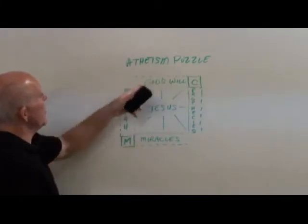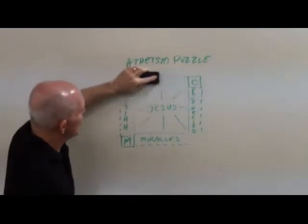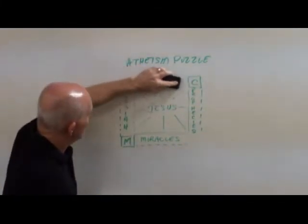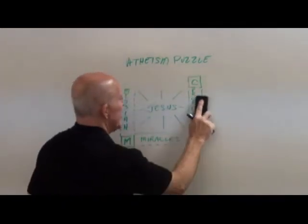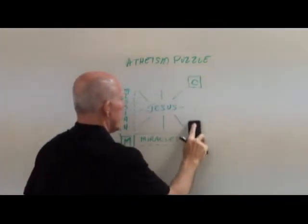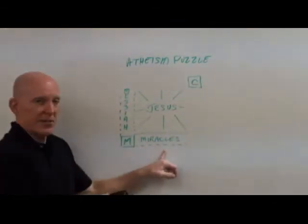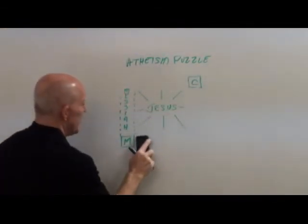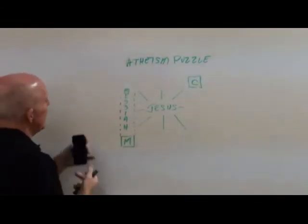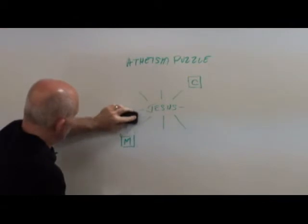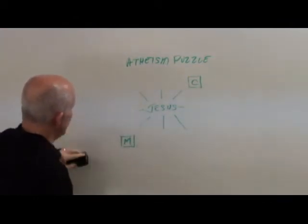We look at the side pieces. Well, if there's no God, there's no God's will, so this one disappears. Certainly prophecies - there's no one there to give a prophecy, so this thing disappears. There is no one there to do miracles because there's no supernatural power to go beyond the forces of nature. And certainly there is no Messiah because there's no sin for a Messiah to come and take care of.